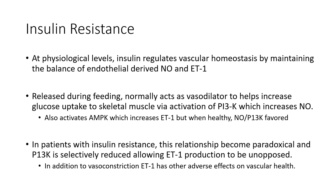Now, insulin resistance — we touched on this in the obesity lecture. At physiological levels, insulin regulates vascular homeostasis by maintaining a balance of endothelial-derived nitric oxide and endothelin-1. Nitric oxide is a vasodilator; endothelin-1 is a vasoconstrictor. When we eat, insulin is released, which normally acts as a vasodilator, especially at the muscle level. Our skeletal muscle is the sink for blood glucose. This is achieved through activation of the PI3K receptor, which increases expression and bioavailability of nitric oxide. In a normal situation — normal body composition, normal blood glucose, normal insulin signaling — this balance is maintained, which favors nitric oxide.